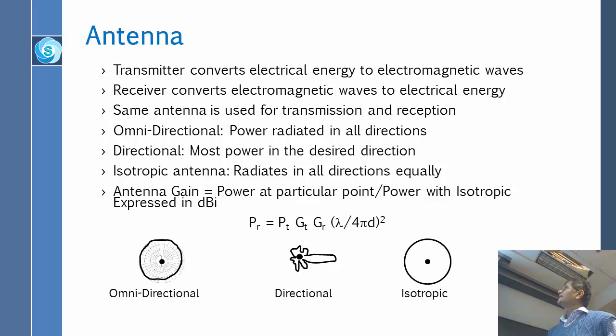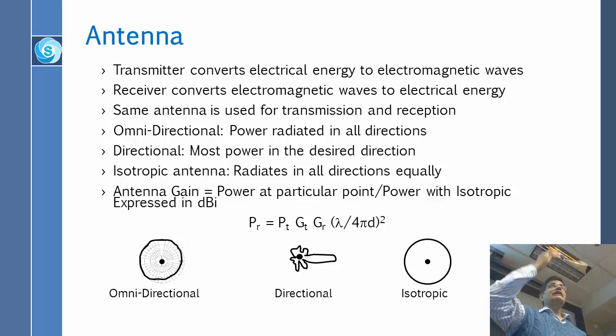So the power received, Pr, is equal to power transmitted, Pt, times the gain of the transmitting antenna, Gt, times the gain of the receiving antenna, Gr, times lambda over 4 pi d squared. Lambda is the wavelength and d is the distance. So if you have a sphere of radius d, it has an area of 4 pi d squared. So basically this is the formula by which you can calculate the Pr. All you need is the transmitting antenna and the receiving antenna. Either one could have a high gain. If the transmitting antenna has a high gain, you get more power. If the receiving antenna has a high gain, you can receive more power.